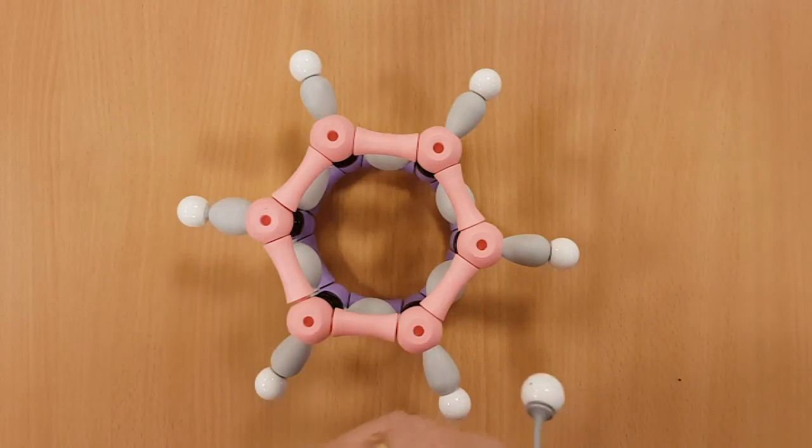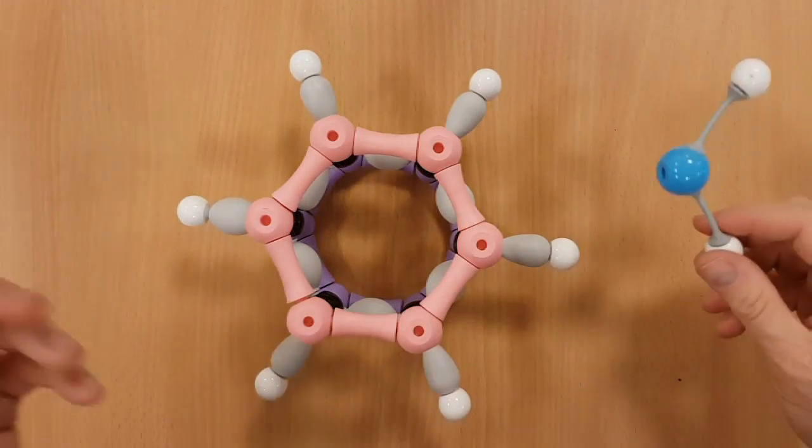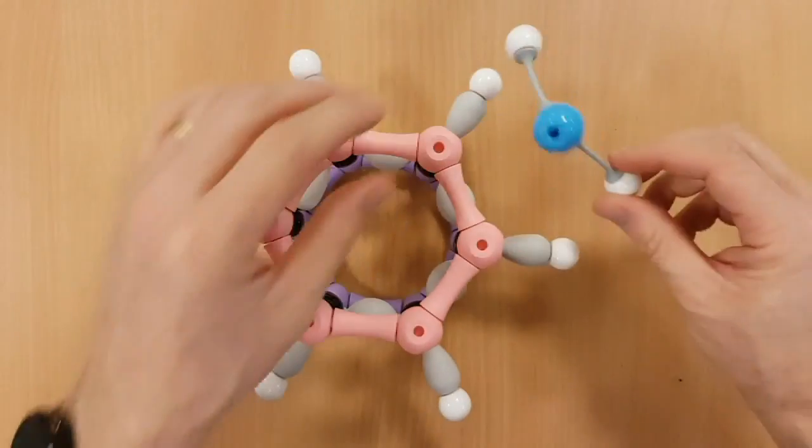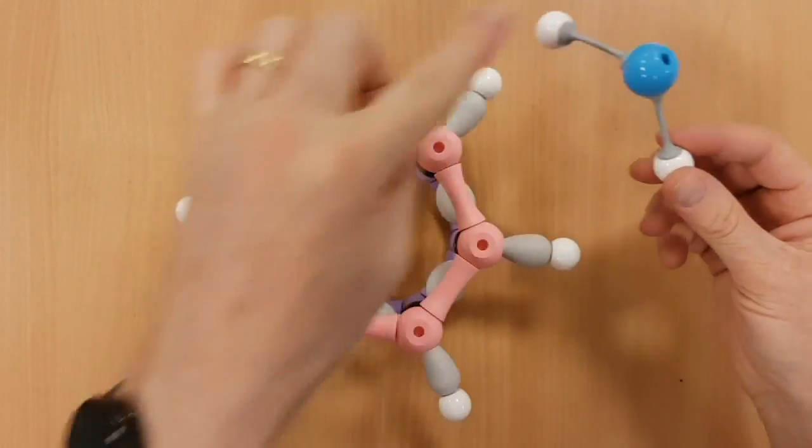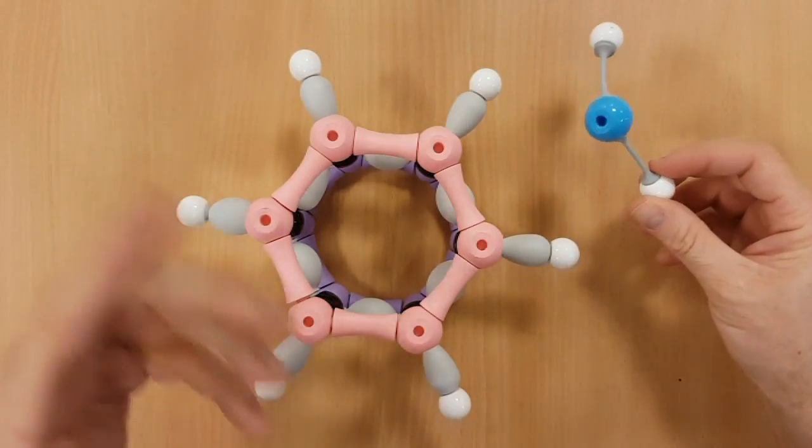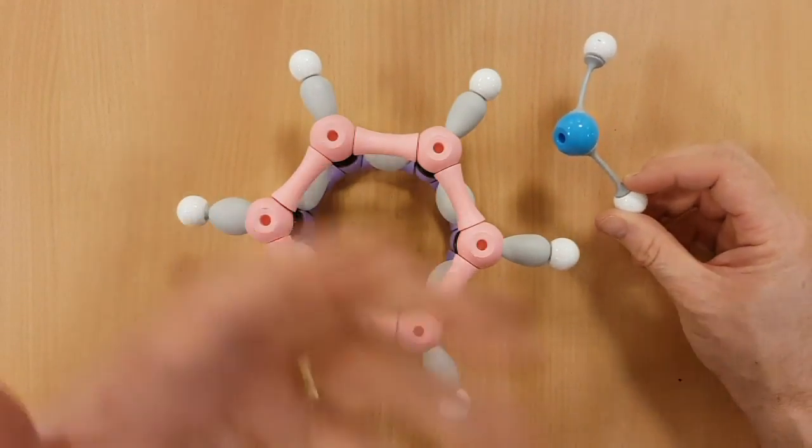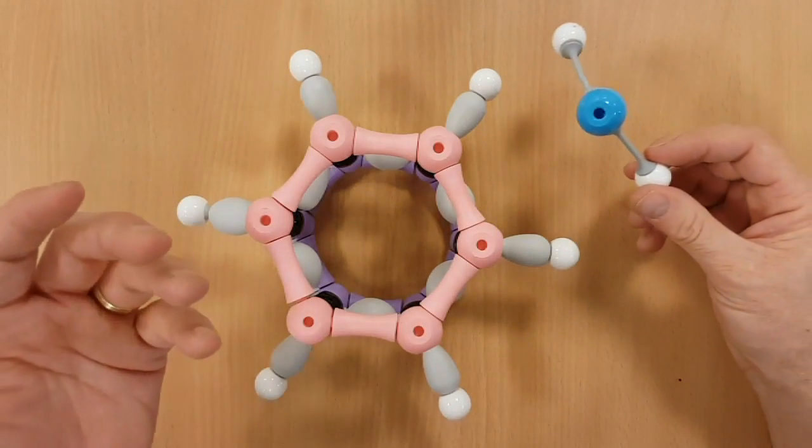The second electrophile the IB want you to know, electron loving thing, is this. This is NO2+. Now how do you make that? Well you have to stick nitric acid with sulfuric acid and heat it up to 50 degrees.